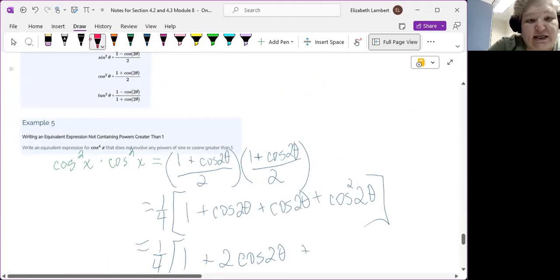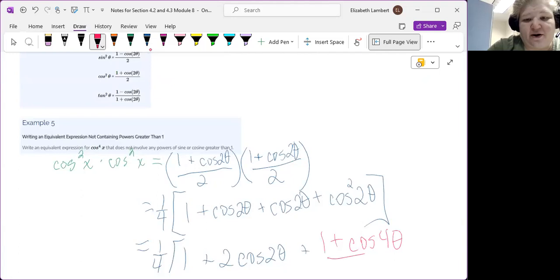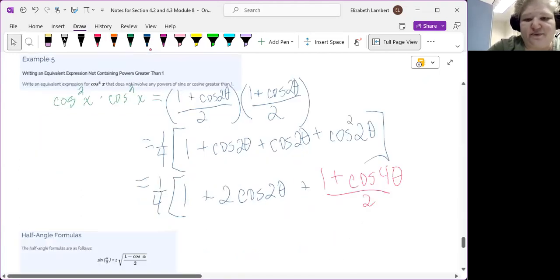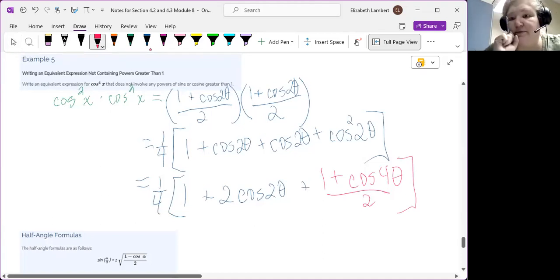So we have 1 plus 2 cosine 2θ plus cosine squared 2θ. So if I sneak 2θ in here it would be 2 times 2θ here. So cosine squared 2θ is the same as 1 plus cosine of 4θ all over 2.